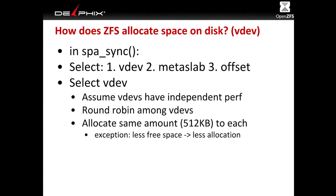We aren't allocating anything from open context — it all happens when we're syncing things out. We've accumulated a gigabyte of dirty data, and that might be like 10,000 blocks. For each of those blocks, we create an internal data structure called a ZIO that is used to track the allocation and the I/O associated with it through all stages.